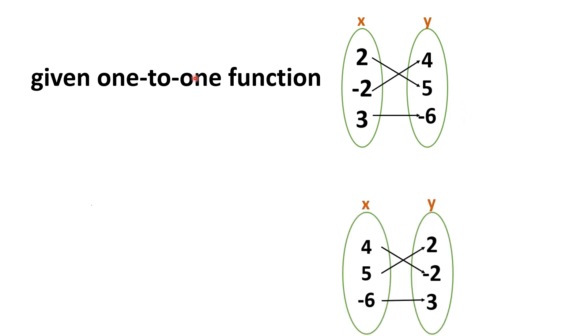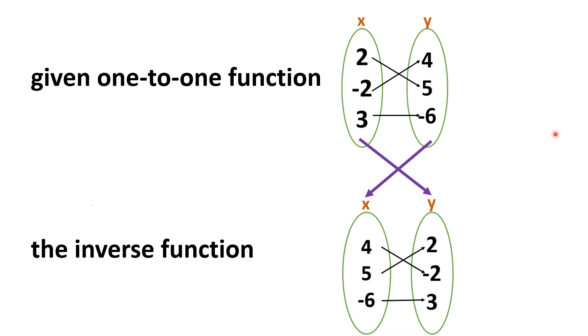Suppose this is the given function. Notice that since the given function is one-to-one, when we interchange the x and y values — that is, the original x values will become the y values, and the original y values will now become the x values — it will still be one-to-one. Look at the arrows. That is, the inverse of a one-to-one function is also a function. So, the concept is that easy.